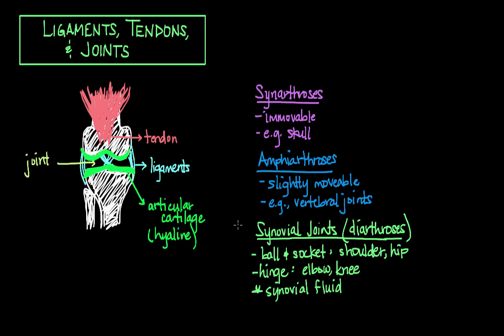The overuse of joints over time can lead to inflammation, which is called arthritis — from arth, meaning joint, and itis, meaning inflammation. This can lead to permanent destruction of articular cartilage, which causes the pain and stiffness of arthritis.